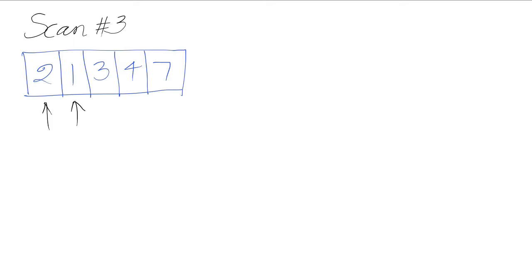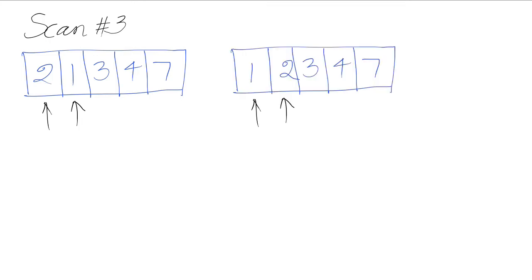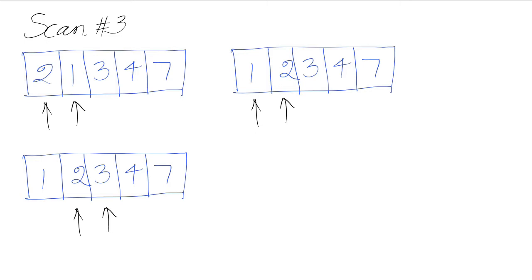At the end of scan two we have [2, 1, 3, 4, 7]. We reset the pointers and swap two and one since they are out of order, giving [1, 2, 3, 4, 7]. We move the pointers right — two and three are already in order. The third largest element, three, now takes its correct slot. At each scan, one number bubbles up to the right location — that's why it's called bubble sort.